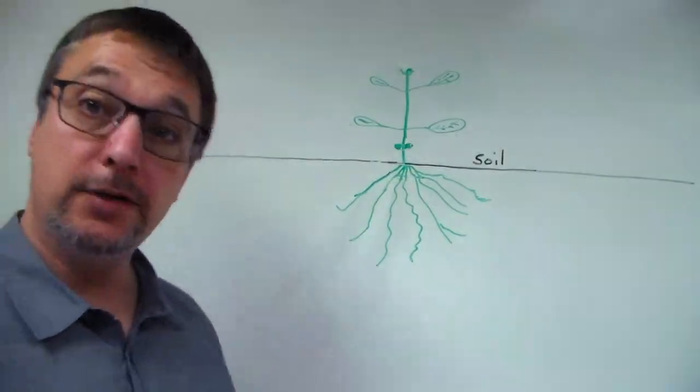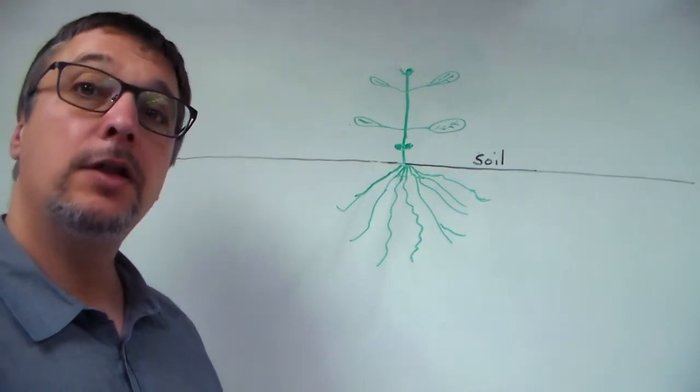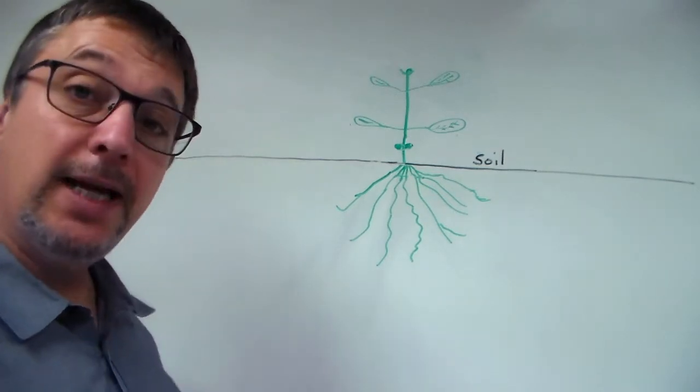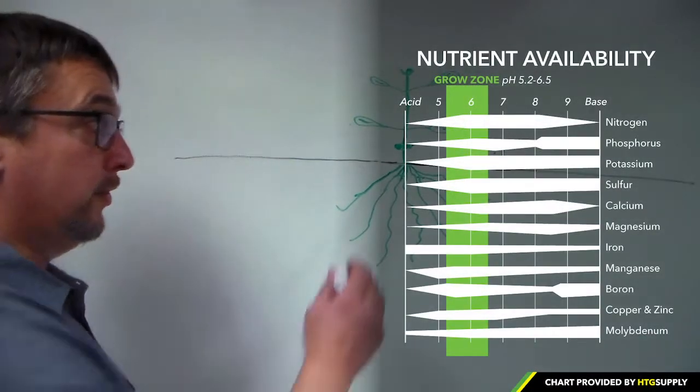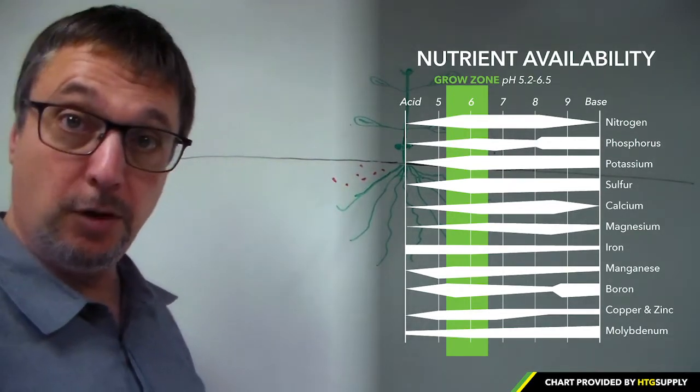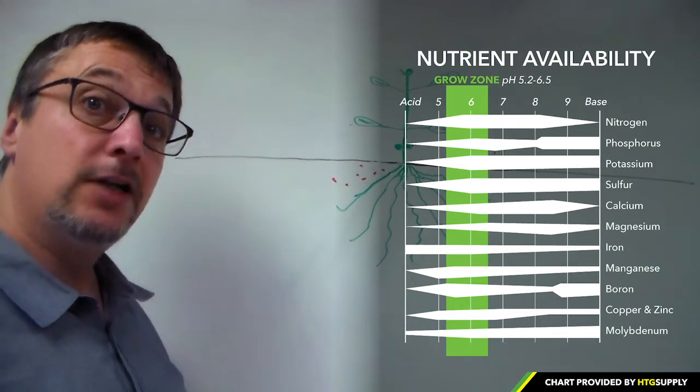If your plant's not growing the way it's supposed to be, if it looks weird and you assume you have a nutrient deficiency, the first thing you want to do is make sure that the pH is okay. If the pH is too high or too low, what happens is the nutrients are actually in the soil or the solution if you're growing hydroponically, but they're not able to be absorbed by the plant.